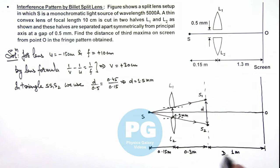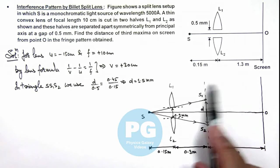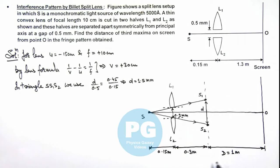Which we can regard as capital D for an equivalent YDSE setup where there are two images of source which will be taken as YDSE slits.